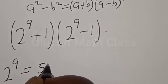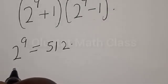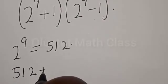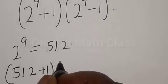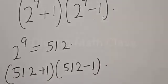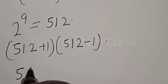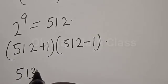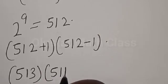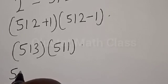Now let's substitute back. We have 512 plus 1, multiply by 512 minus 1. 512 plus 1 is 513, then multiply by 512 minus 1, that is 511. Now remember, 513 can also be expressed as 500 plus 13.